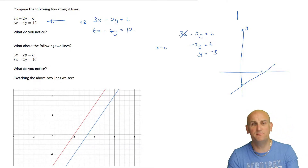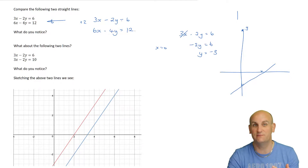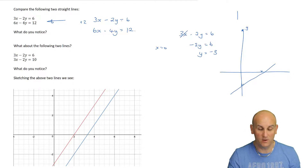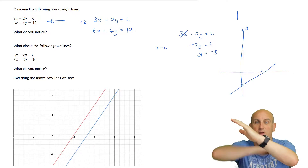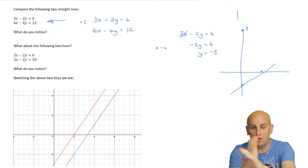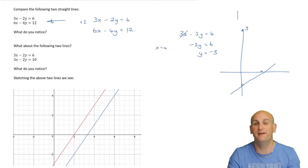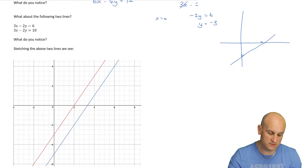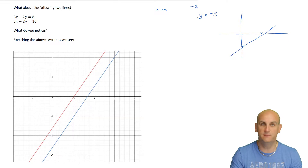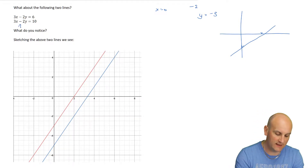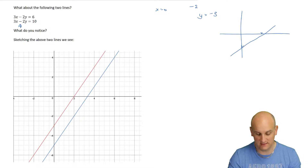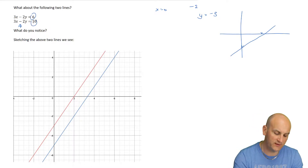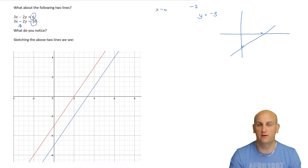So if I plotted both of those on graphing software like Desmos or GeoGebra, the straight lines would look exactly the same - they'd be right on top of each other. They are the same line. Now, what about these following two lines? You might notice that the left-hand side of the equal signs are identical, and the only thing that varies is the right-hand side.